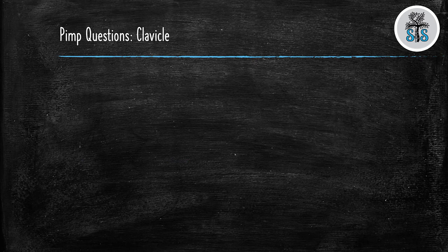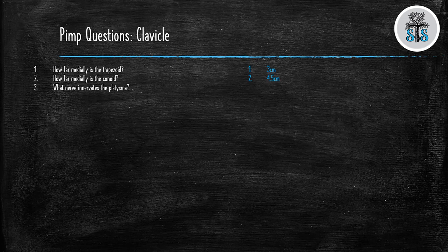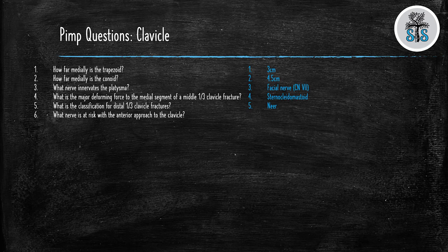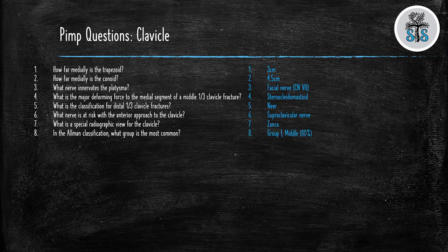Let's go over some high-yield exam questions for clavicles. How far medially is the trapezoid ligament? Three centimeters. How far is the conoid? Four and a half centimeters. What nerve innervates the platysma? Facial nerve or cranial nerve seven. What is the major deforming force to the medial segment of a middle one-third clavicle fracture? Sternocleidomastoid. What is the classification for distal one-third clavicle fractures? Neer. What nerve is at risk with the anterior approach to the clavicle? Supraclavicular nerves. What is a special radiographic view for the clavicle? Zanka. In the Allman classification, what group is the most common? Group one — middle.